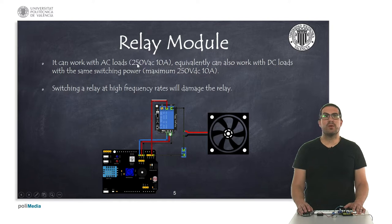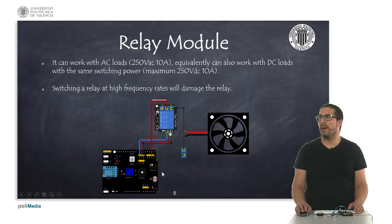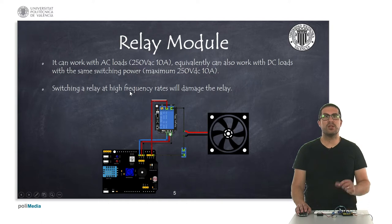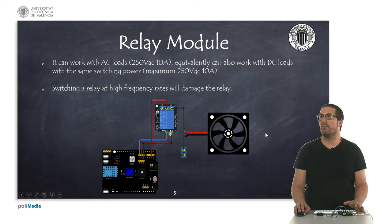And relays can work with loads, AC loads or DC loads up to, in this case, this module, up to 10 amps. So they can manage the high power current demanding loads here. An important thing with the relays is that they are not like transistors, so we cannot switch them at high frequencies.